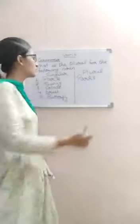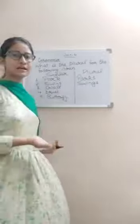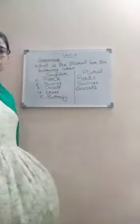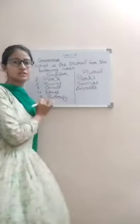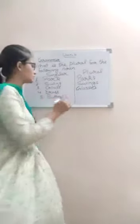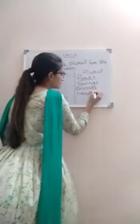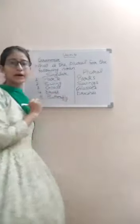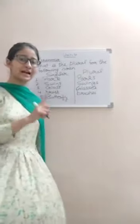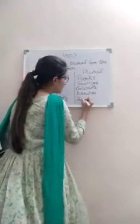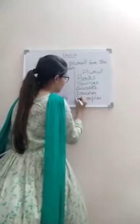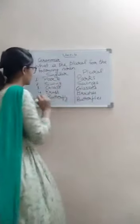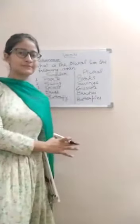Next, swing — we add S, it becomes swings. Glass will become glasses because the word ends with S, so we add ES. Brush — it ends with SH, so we add ES and it becomes brushes. Next word is butterfly — it ends with Y, so we remove Y and add IES, it becomes butterflies. I hope you all have copied this down.